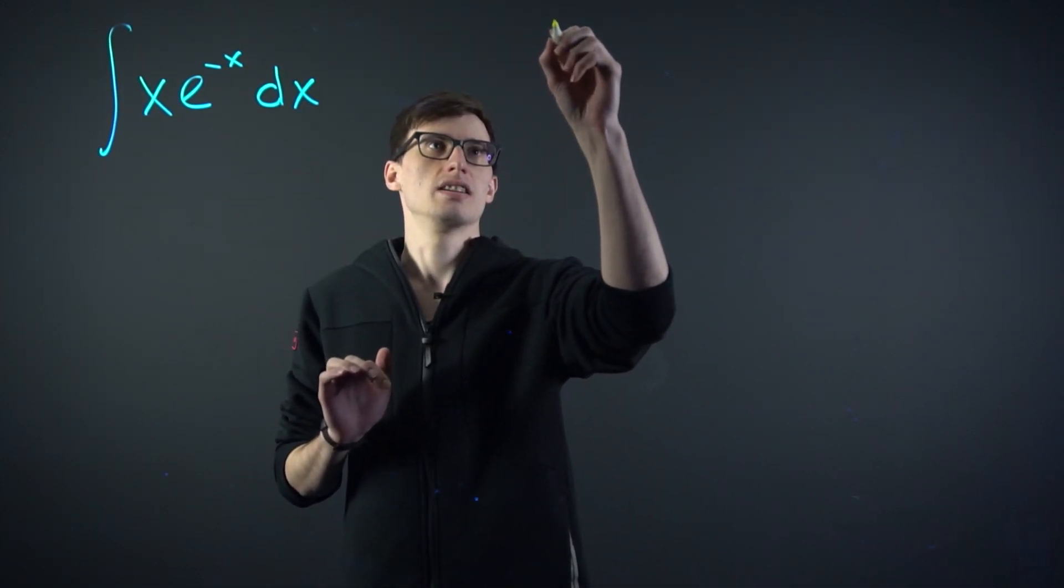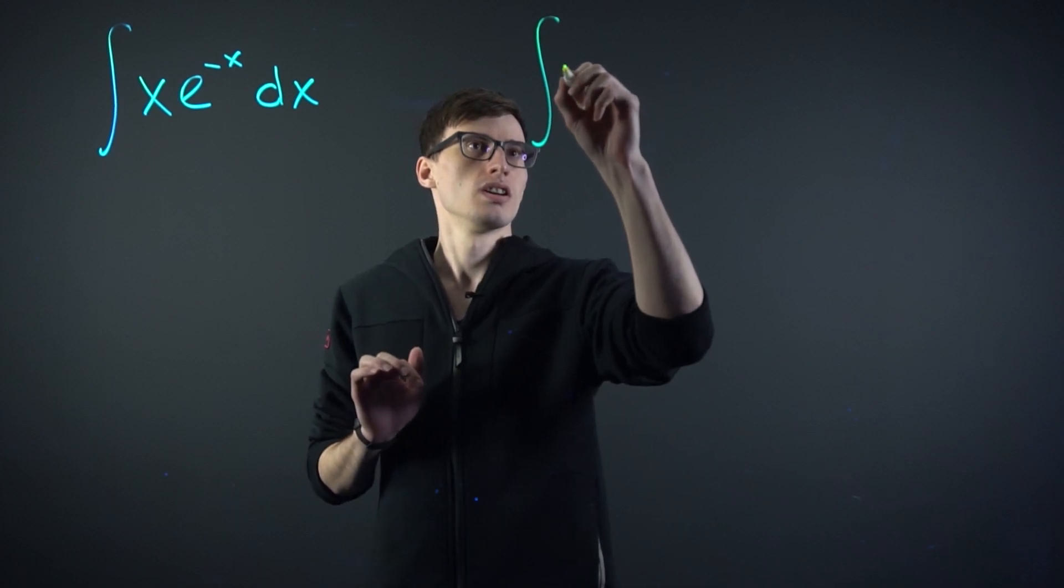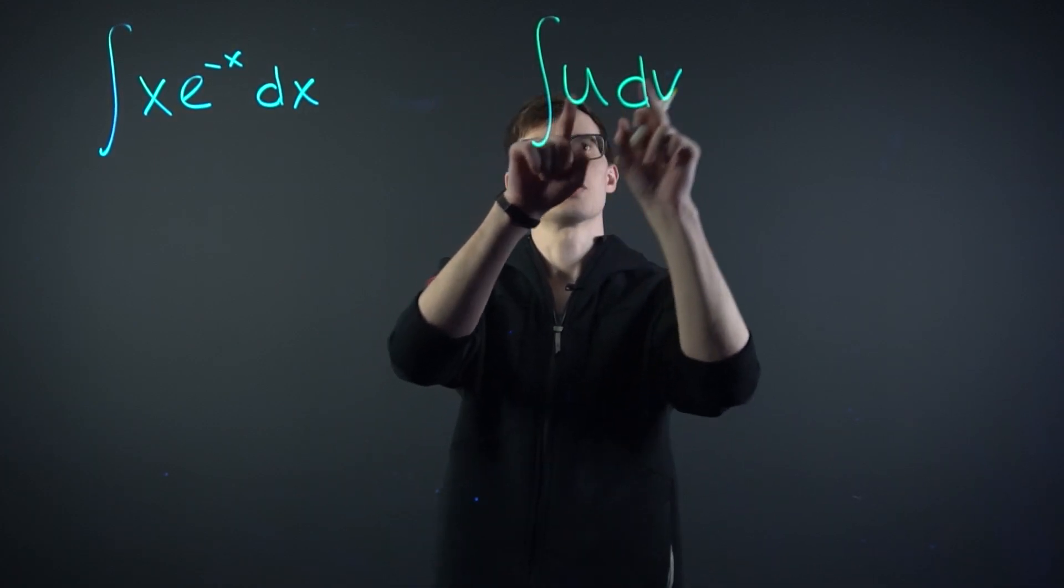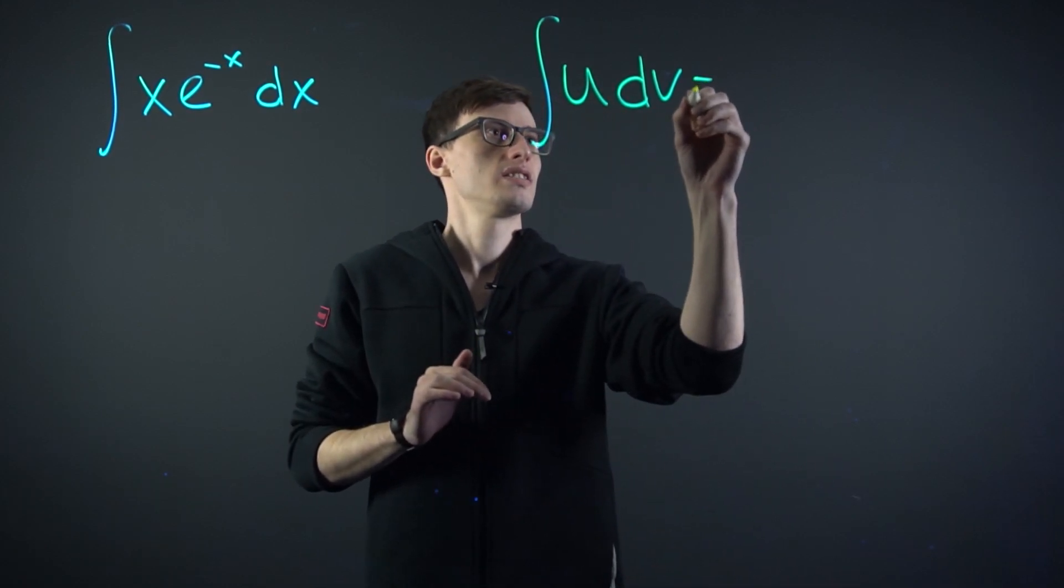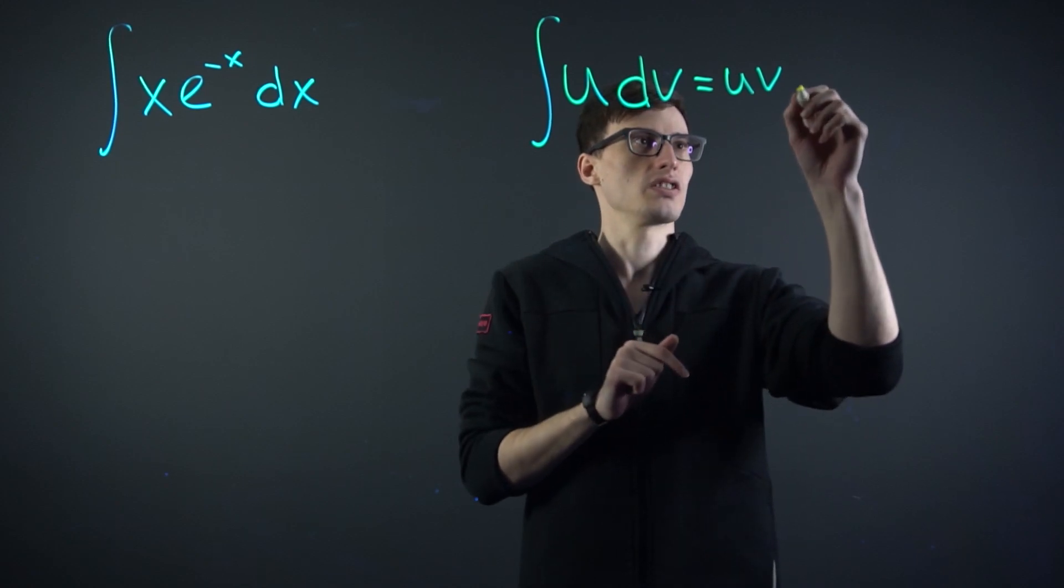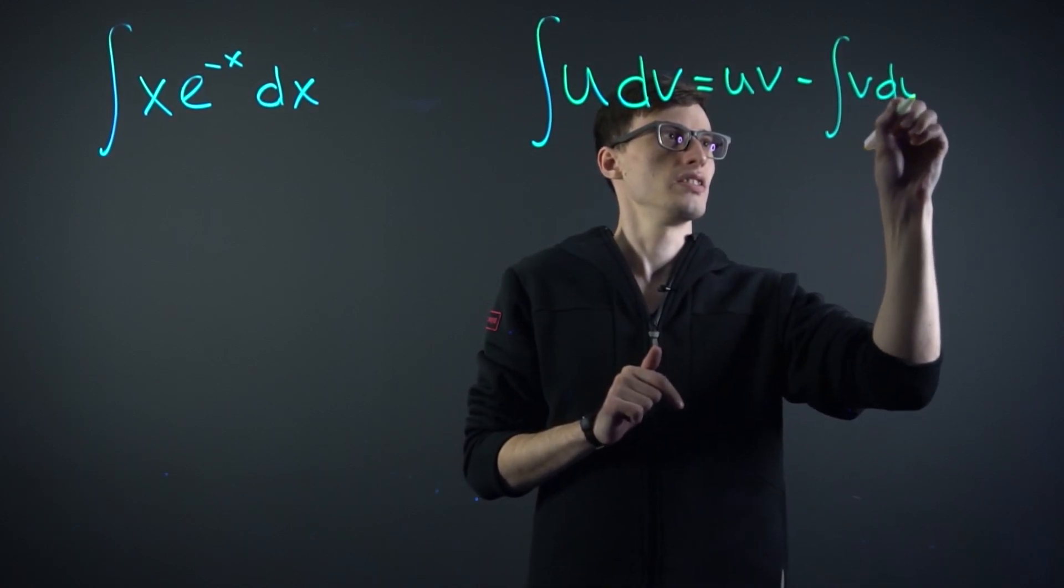And the formula for that is if you have an integral that's u dv with some function and its derivative, it's the same as uv, the integral of the dv function, minus integral of v du.